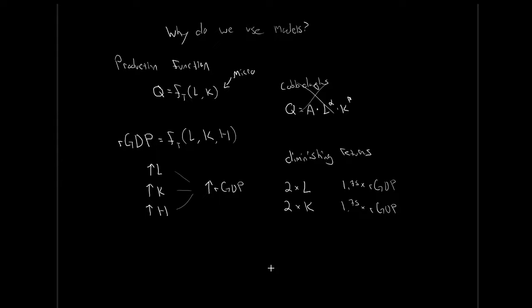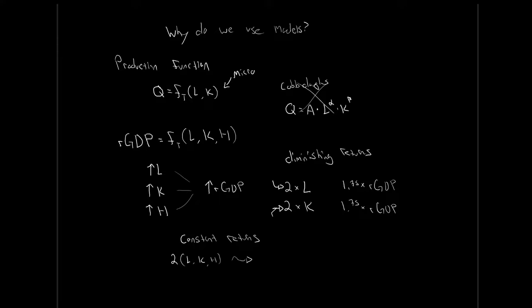We also presume constant returns if we increase things in proportion. In the first case, diminishing returns — if I only increased my labor force, I would have that result; or if I only increased my capital stock, same thing. But what would happen if I did two times my labor, my capital, and my human capital — that is, I doubled all of them? With constant returns, I would expect to witness two times my real GDP. Everything increased proportionally, so I would have a proportional increase in my output.